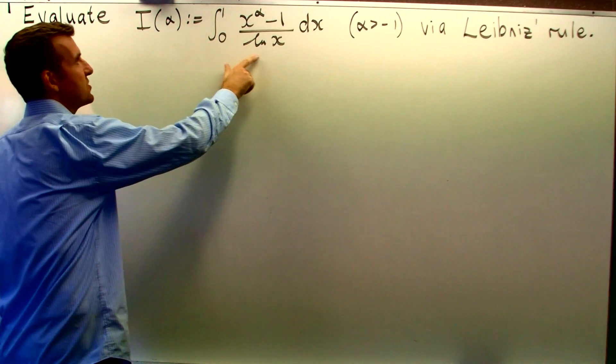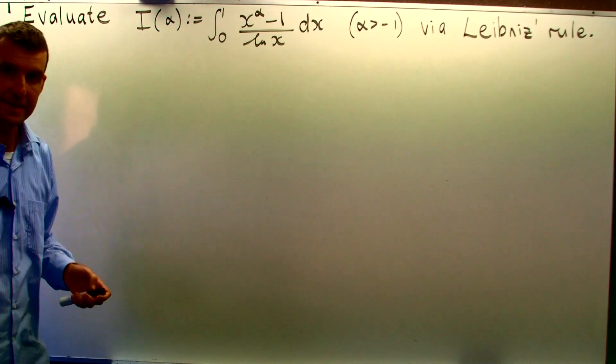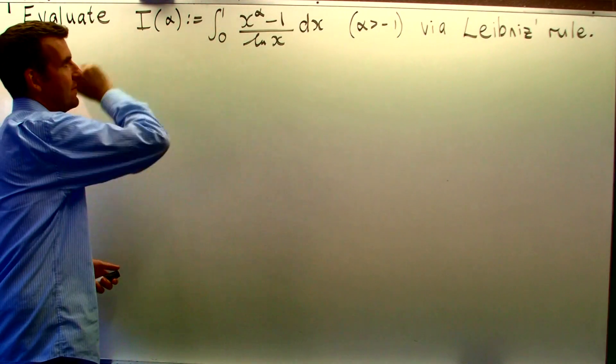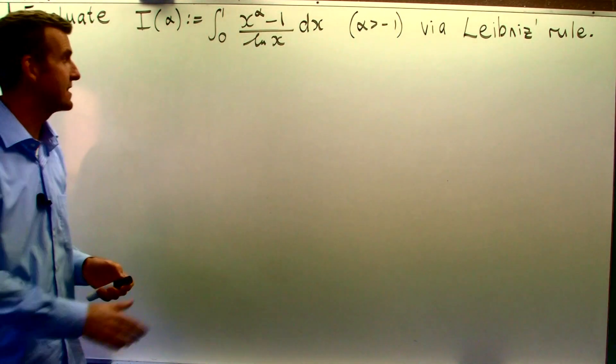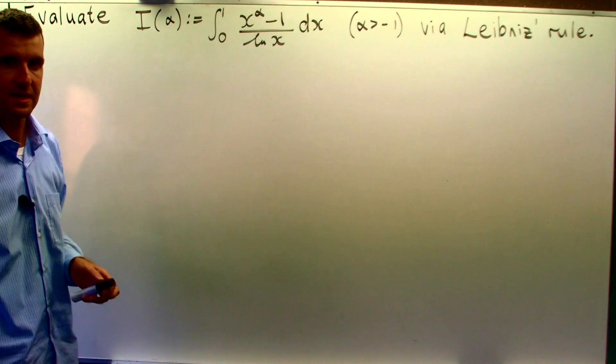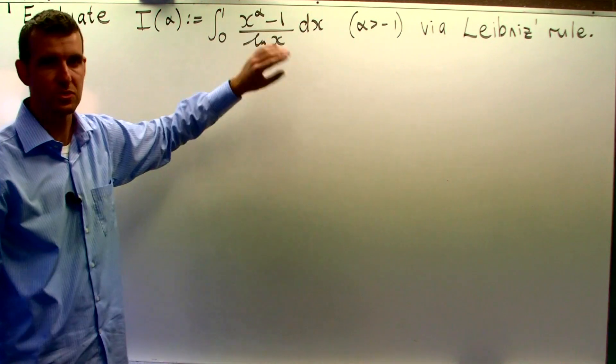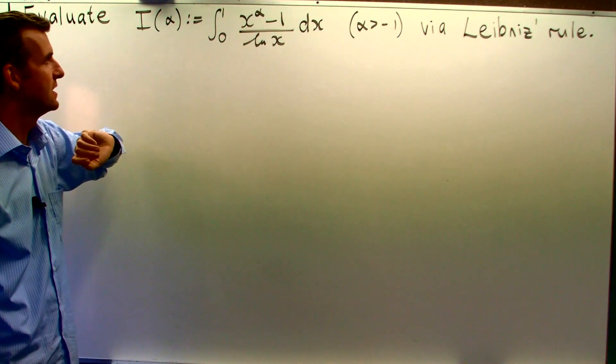This integral is actually a function of alpha. Now, x here is known as the dummy variable. This is not a function of x. The x disappears if you could do the integration directly.